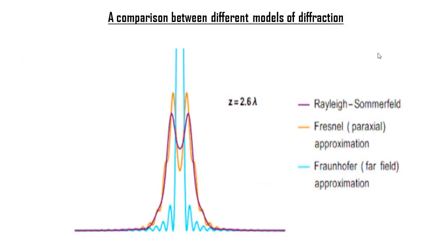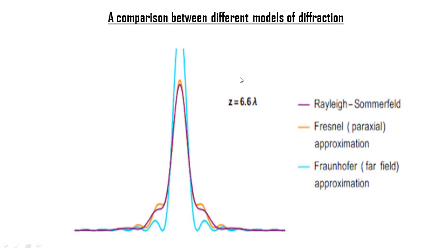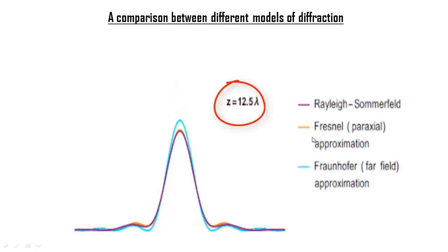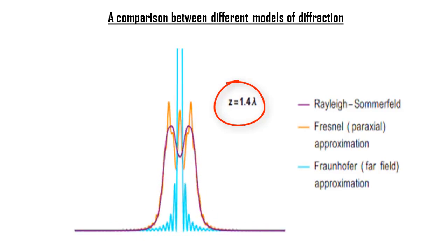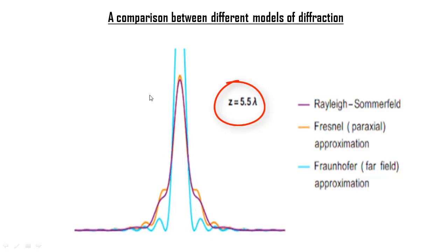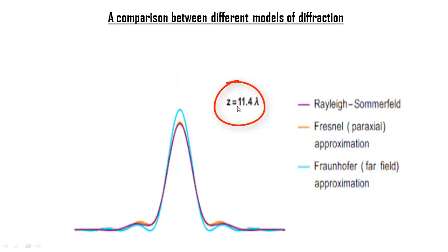This is an animation that compares the three different mathematical models that explain diffraction. The parameter z denotes the distance from the aperture where diffraction is taking place. We've talked about Fresnel's model and Fraunhofer's model. The Rayleigh-Sommerfeld model of diffraction is also called the scalar model of diffraction, but we will not talk about it here. The z parameter is increased gradually. The colorful shapes that we see actually show the diffraction pattern that we expect to see on a screen z distance away from the slit.